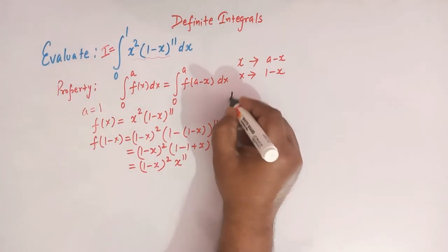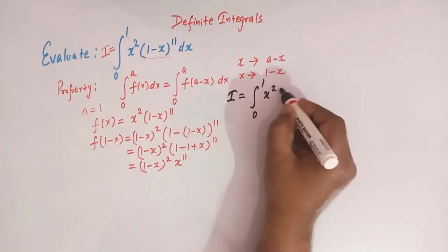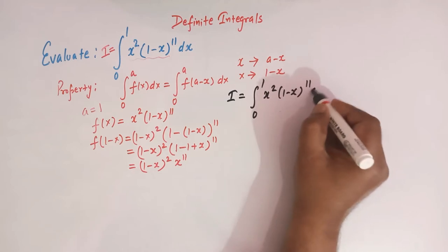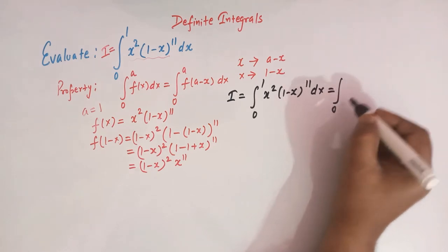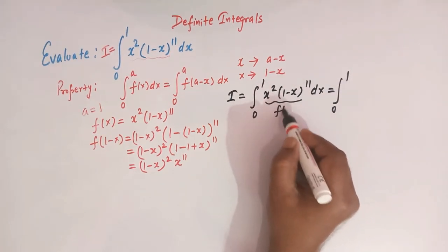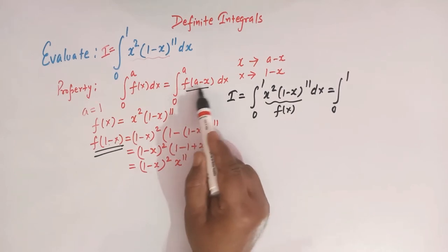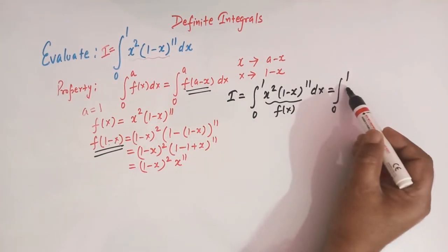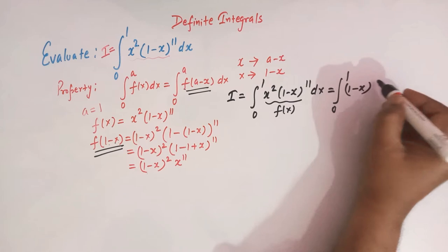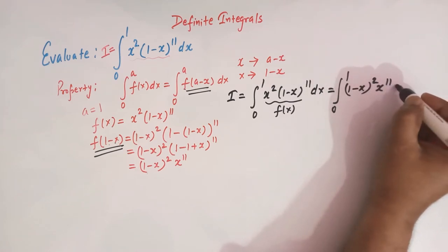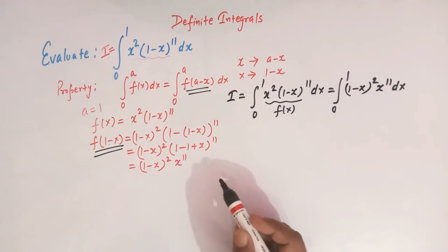So now the integral I can be rewritten using the property. We replace f(x) with f(1 minus x). So I equals the integral from 0 to 1 of (1 minus x) whole squared times x raised to 11 dx.